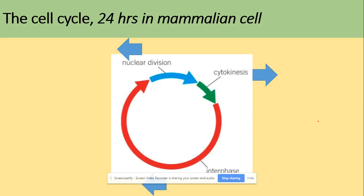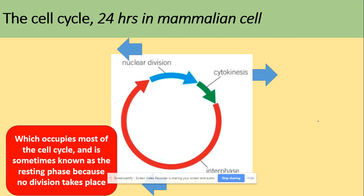The cell cycle lasts 24 hours in mammalian cells. Interphase occupies most of the cell cycle — around 90% — because during this stage the cell is getting ready for division: the DNA replicates and the cell checks whether it is ready for replication.